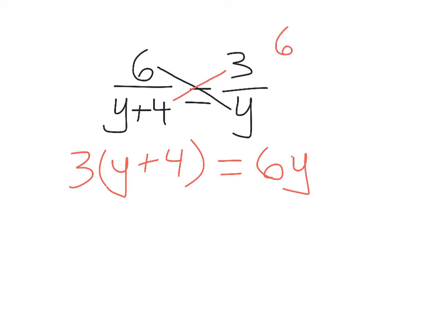Would it matter if you did it the other way and wrote 6y equals 3 times y plus 4? That would not matter. Either way, you're going to end up with 3y plus 12 equals 6y when you distribute.